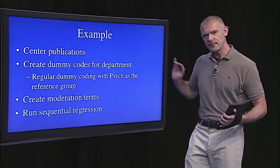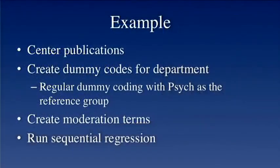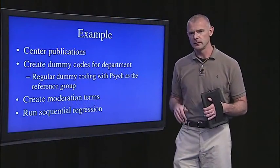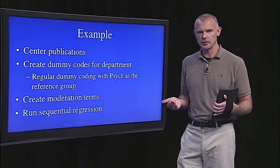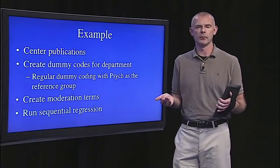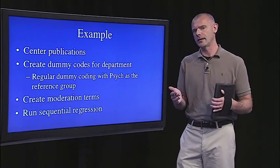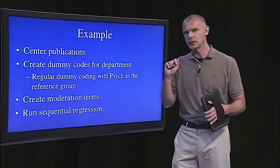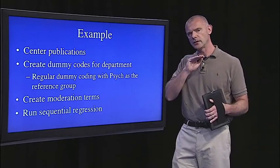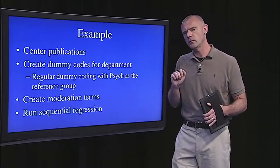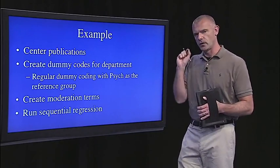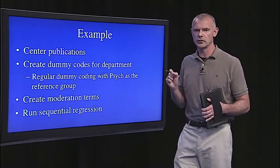First step is to center the continuous predictor — that's just centering publications, which we did in the previous segment. We also have to create dummy codes for the categorical predictor. I'm going to use my own department as the reference — I'm in psychology, so let's make psychology the reference. There are three levels of this categorical variable, so we need two dummy codes. Psychology professors get coded zero, zero; history professors get one, zero; sociology professors get zero, one.